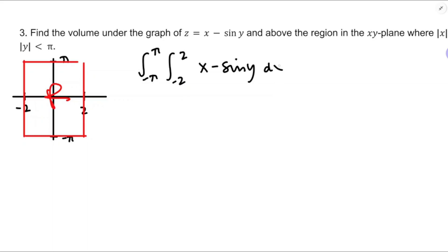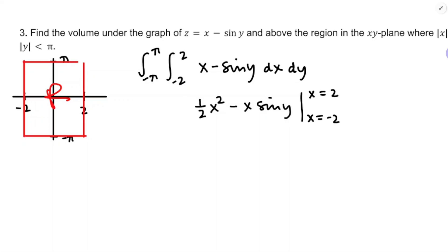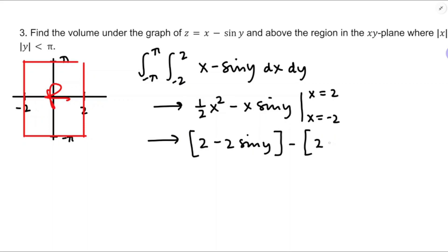With respect to x, the antiderivative of x would be one-half x², and the antiderivative of sine y is x times sine y. As x runs from negative 2 up to positive 2, I'll have one-half of 4 is 2 minus 2 sine y, minus plugging in negative 2 which also gives 2 minus negative 2 sine y. So 2 minus 2 is 0, and negative 2 minus 2 more would be negative 4 sine y — that'll be my integrand integrating from negative π to π.